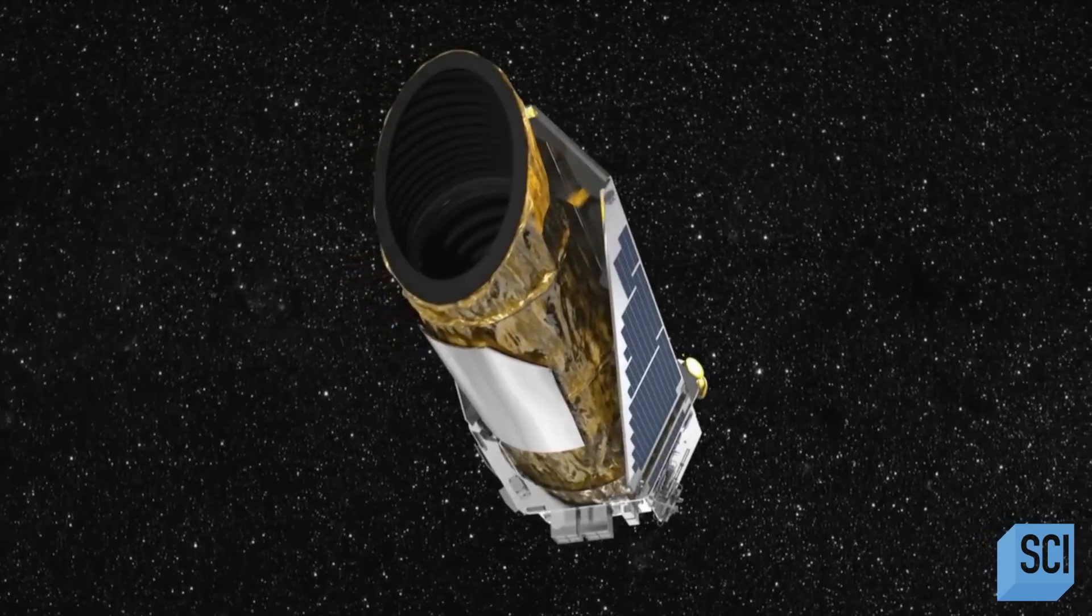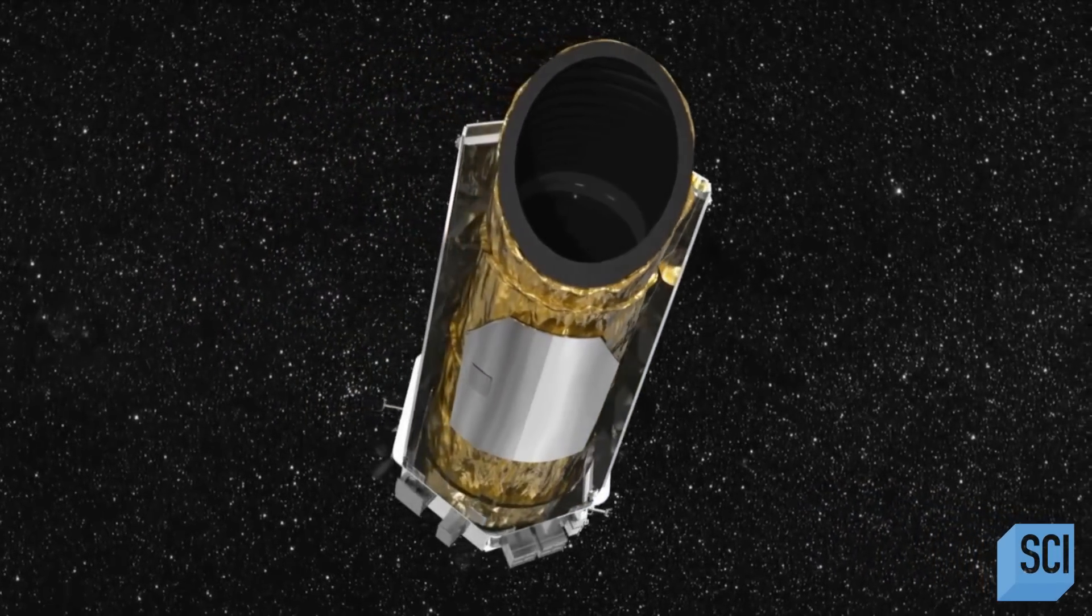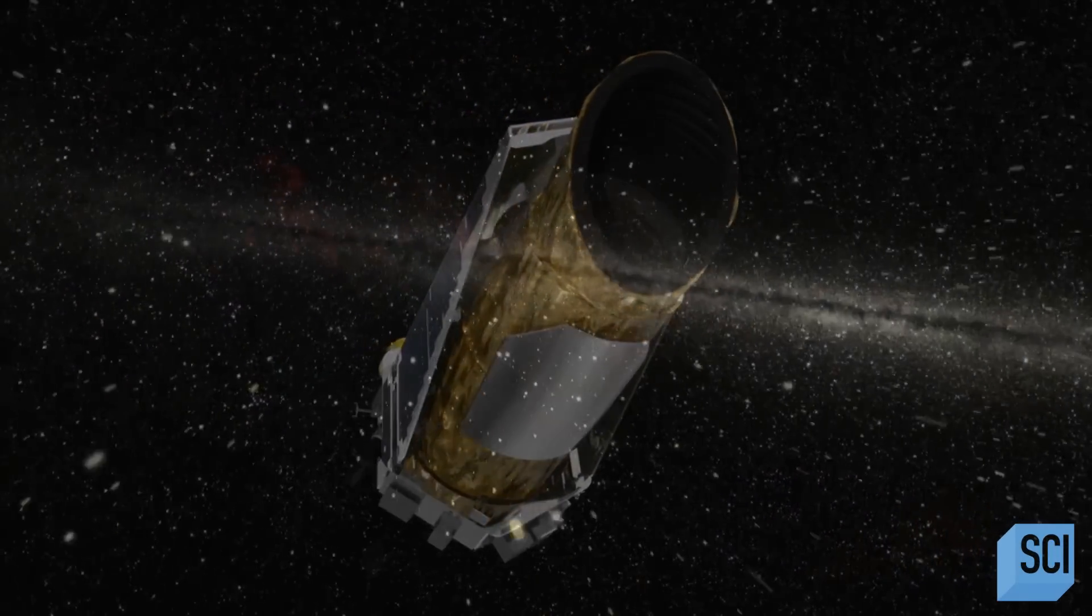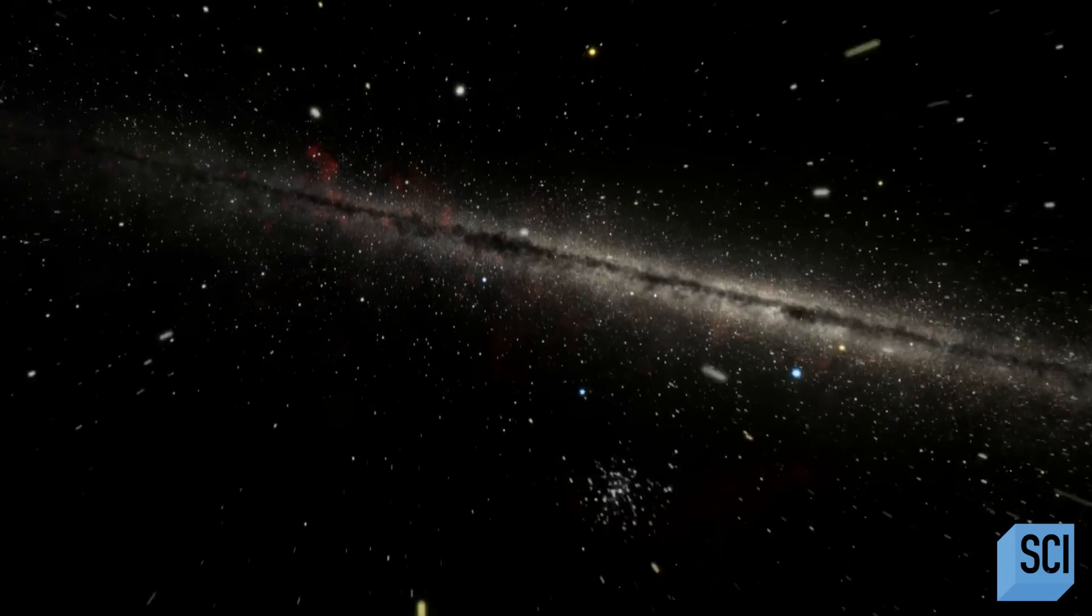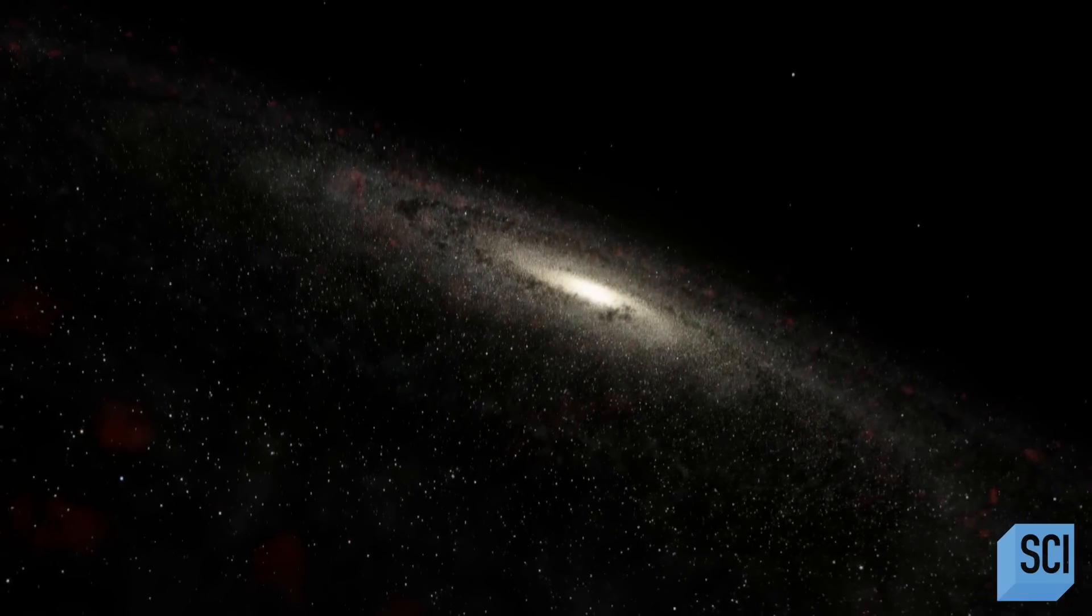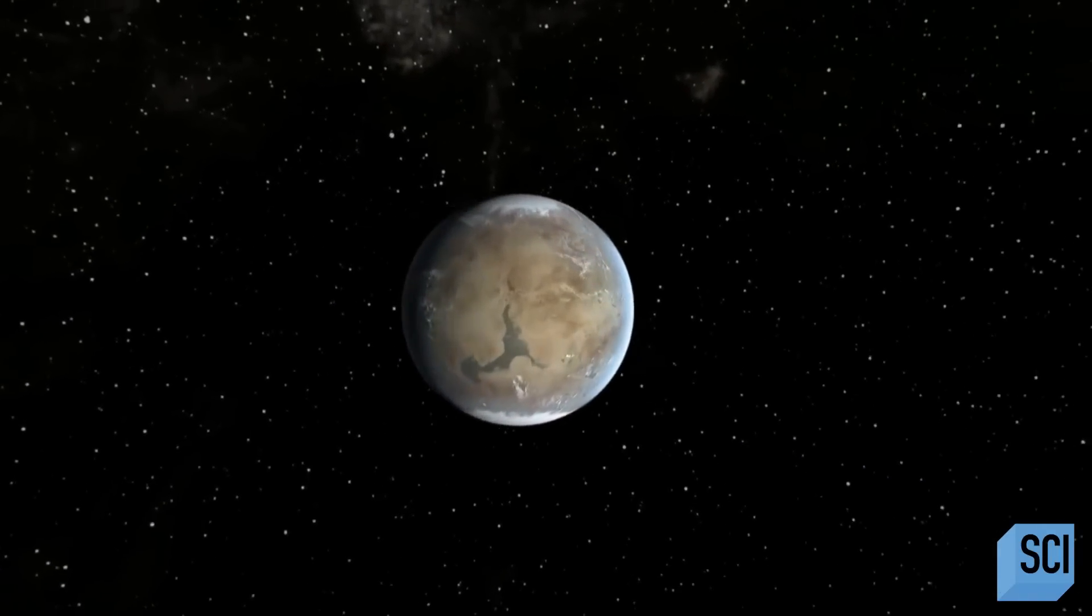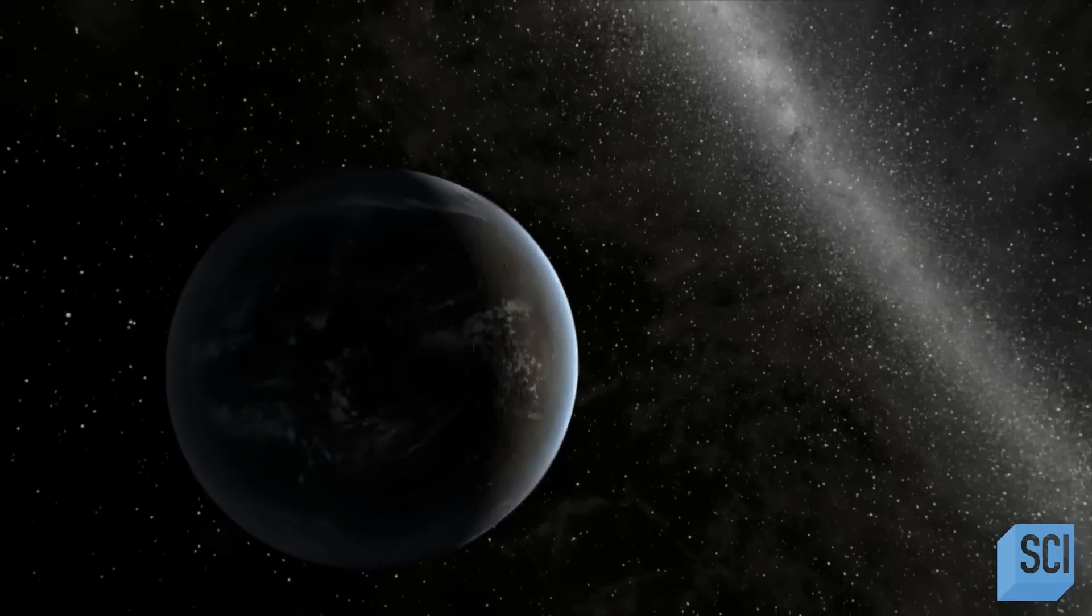Before Kepler was launched, there were hundreds of planets that we knew of in systems around other stars, and now we know of thousands. That's why Kepler was so revolutionary. Kepler is a space telescope specifically designed to survey our region of the Milky Way galaxy to discover Earth-size and smaller planets in or near the habitable zone of their respective stars and determine the fraction of the hundreds of billions of stars in our galaxy that might have such planets.